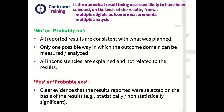Or you are in a situation where there is only one possible way in which the outcome domain can be measured and analysed — for example, time to death — so you can be quite confident there's no selective reporting. Or you have some inconsistency, but all the inconsistencies are explained, because it can happen that the investigator had to change the type of analysis, but provides clear explanations and you can see it's not related to the results. Your answer in these cases will be no or probably no, moving toward low risk of bias.